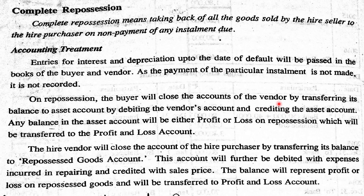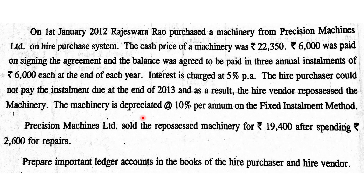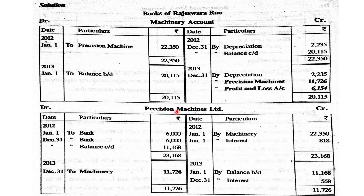The buyer will close the account of the vendor. The vendor account will be closed by transferring its balance to the asset account. The vendor account — Precision Machines Limited — will be closed; the credit side will be balanced. Journal entry: Hire Vendor Account Dr. to Asset Account (Machinery) — balancing figure ₹11,726.